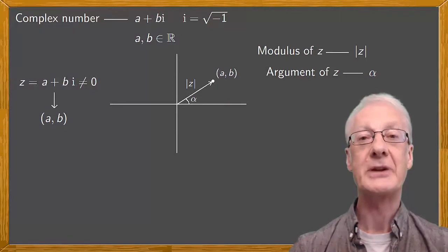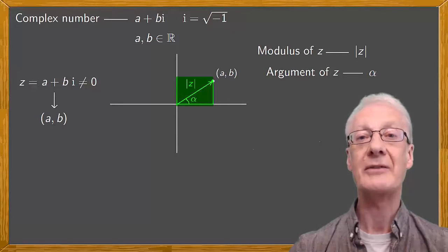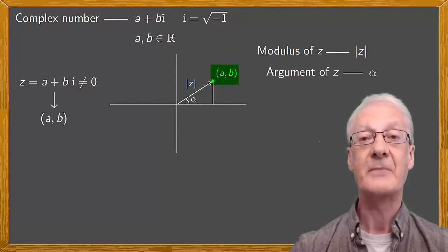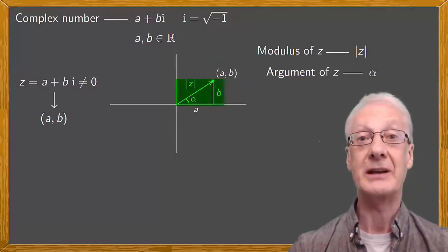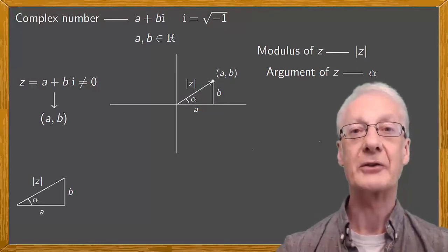Now let's obtain expressions for the modulus and argument of z. We draw a vertical line segment. Notice that we have a right triangle. And as this is the point ab, this side represents a and this side measures b. We'll draw the right triangle separately to make it clear. Now we can apply Pythagoras' theorem.